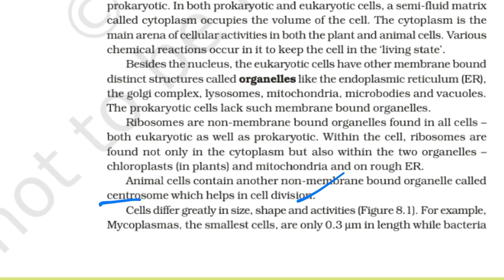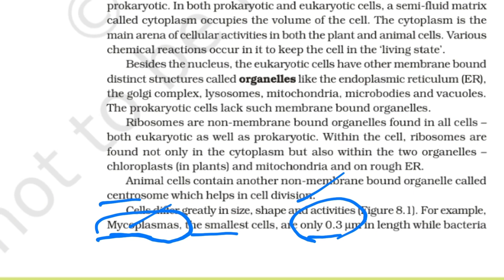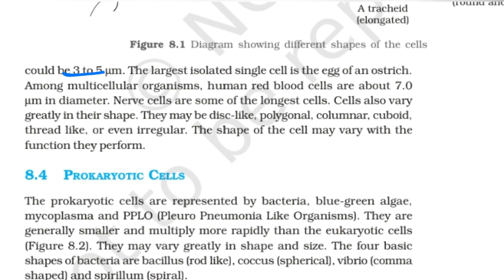Cells have different shapes and different sizes. Mycoplasma is the smallest cell, with a length of 0.3 micrometers. Bacteria range from 3 to 5 micrometers in length.